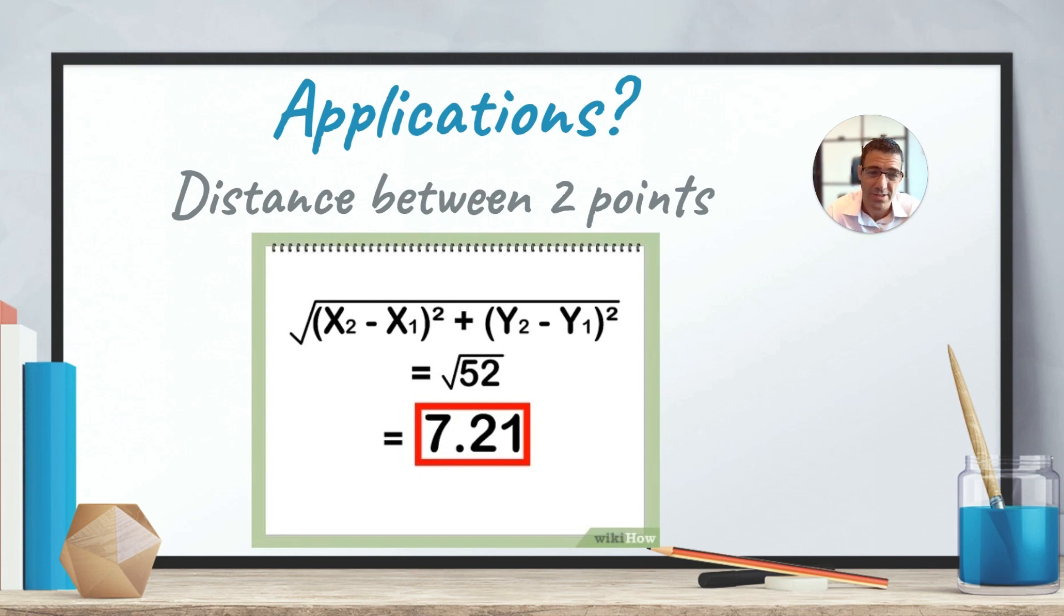And the square root of 52 is 7.21. It's nice to round to two decimal points whenever you do mathematical work. So if you had this question with the distance between two points, try and think about Pythagoras' theorem. It's a straight application of the theorem. You don't need to remember the distance formula. You just need to understand Pythagoras' theorem.